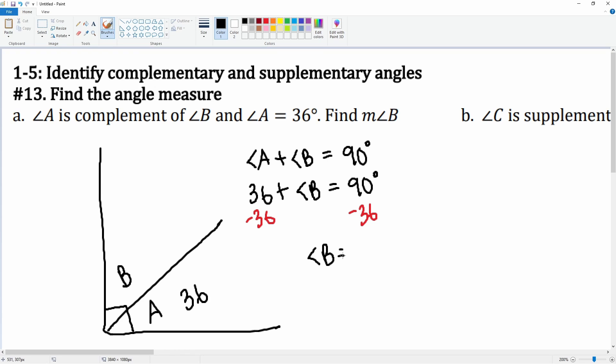So 90 subtract 36 gets us 54 degrees. So this angle here is 54 degrees.